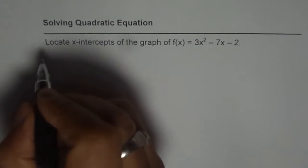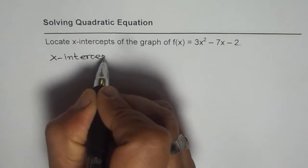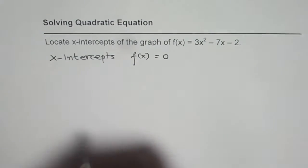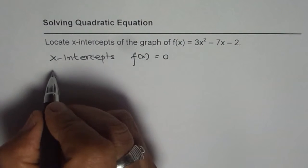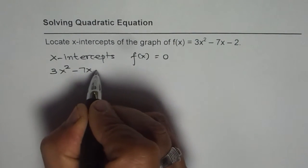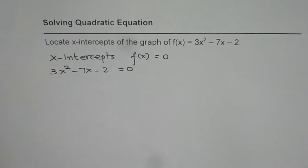When we say x-intercepts, it means f(x) is equal to 0. So we have to find the value of x which will result in f(x) as 0. That means we have to solve the equation 3x² - 7x - 2 = 0.